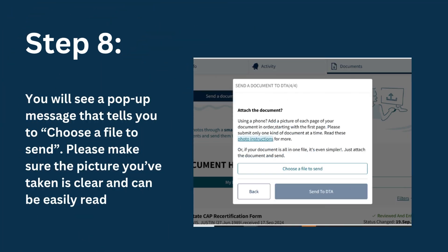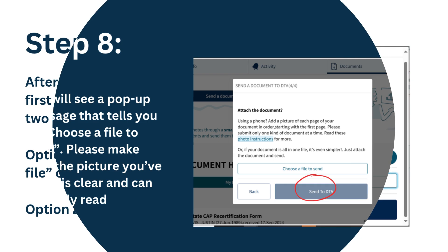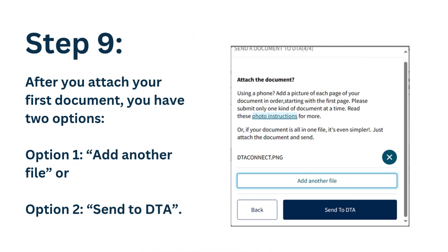Step 8: you will see a pop-up message that tells you to choose a file to send. Please make sure the picture you've taken is clear and can be easily read. Step 9: after you attach your first document, you have two options — Option 1: add another file, or Option 2: send to DTA.